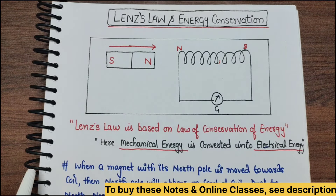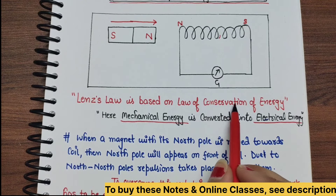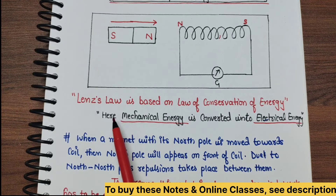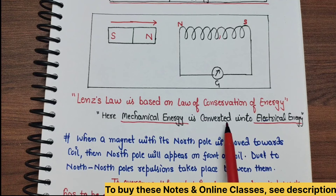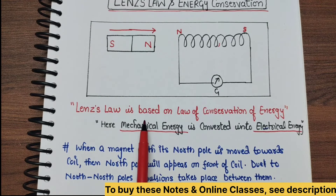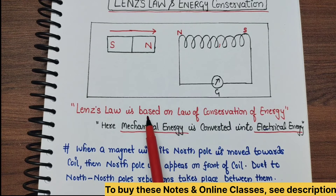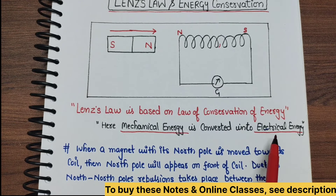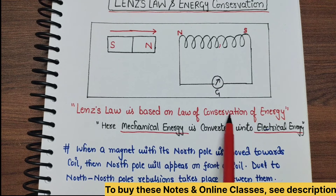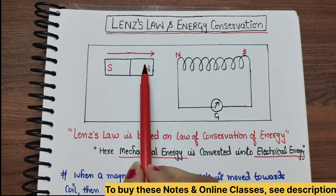Here we have to learn about energy conservation. Lenz's law is based on the law of conservation of energy. That means mechanical energy is converted into electrical energy. You should always remember that mechanical energy is converted into electrical energy, hence we can say that energy is conserved.